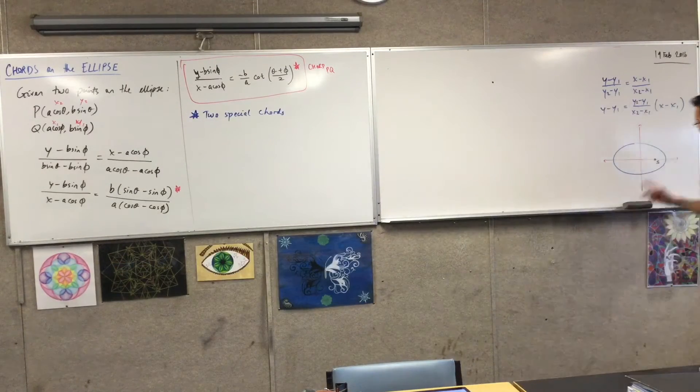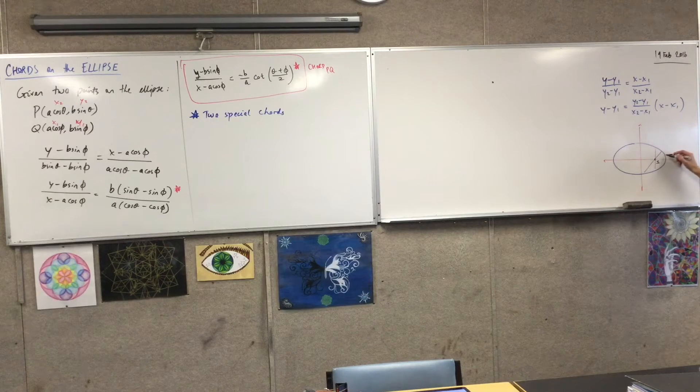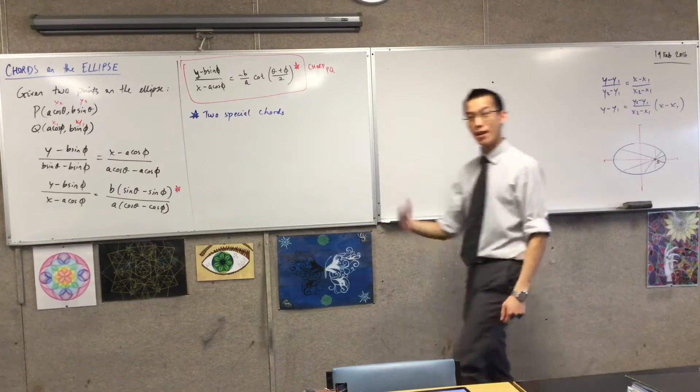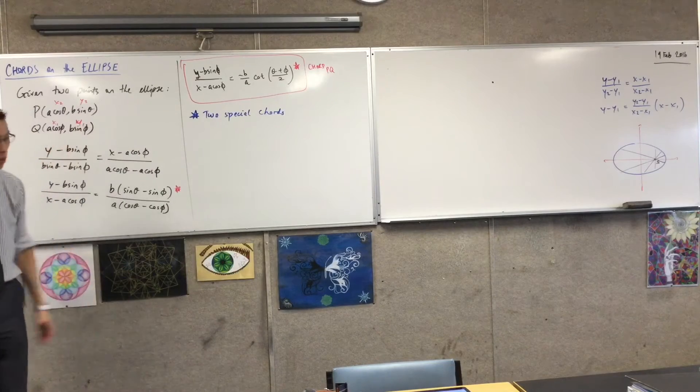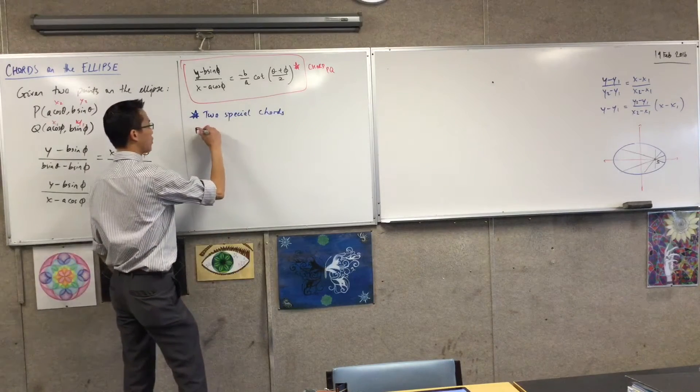All of the chords that pass through S, like this guy, and this guy, and that guy, and all of his cousins. Because they are chords and they pass through the focus, we call them focal chords. We've met this on the parabola. So firstly, let me look at the focal chord.